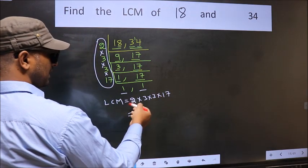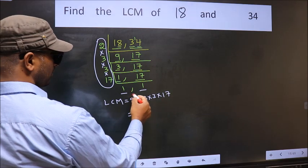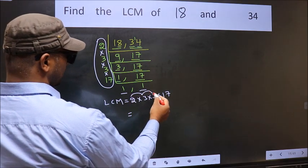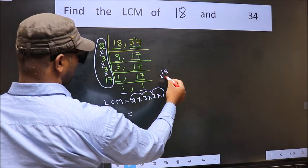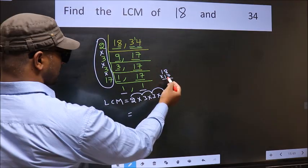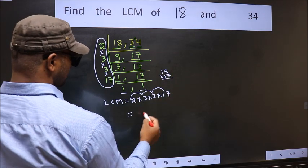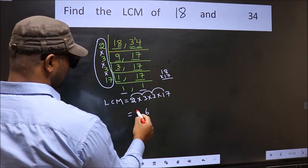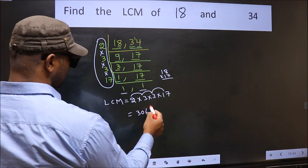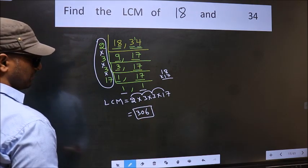So let us multiply these numbers. 2 into 3, 6. Into 3, 18. Into 17. 17 into 8, 136. 17 once, 17 plus 13 is 30. So 306 is our LCM.